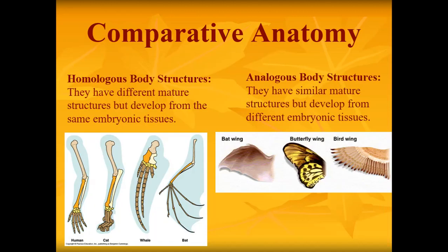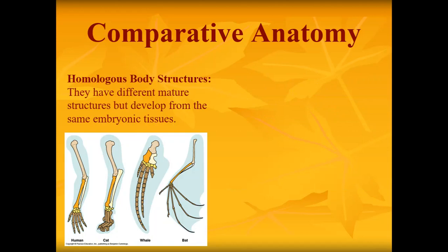Another piece of evidence for evolution is homologous body structures. 'Homo' means same — so these are the same body structures that started from the same embryonic tissue but turned into different structures. Looking at the yellow tissue here: as an embryo it was the same tissue across species, but look at how it helps these animals differently. That's the human forearm, the cat's leg, the whale's flipper, and the bat's wing. The phalanges — fingers for humans — are part of the whole foot for the cat, the whale flipper, and the bat wing. They start the same but end up different.